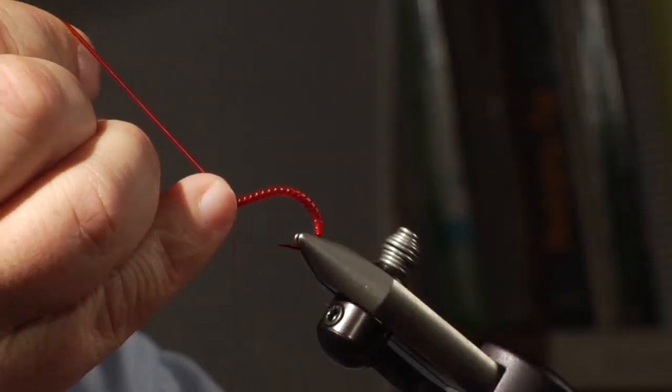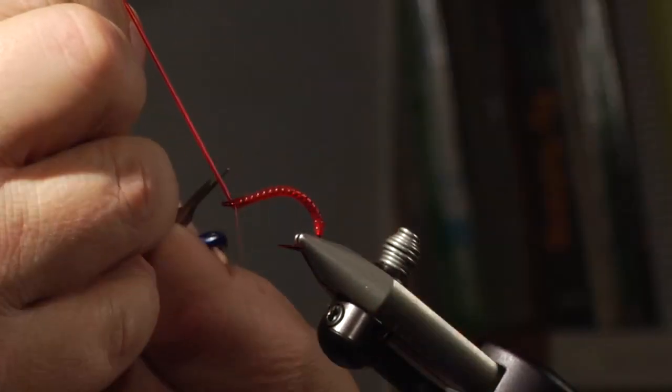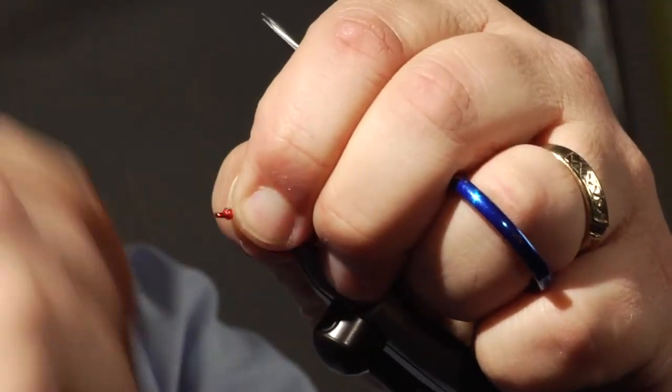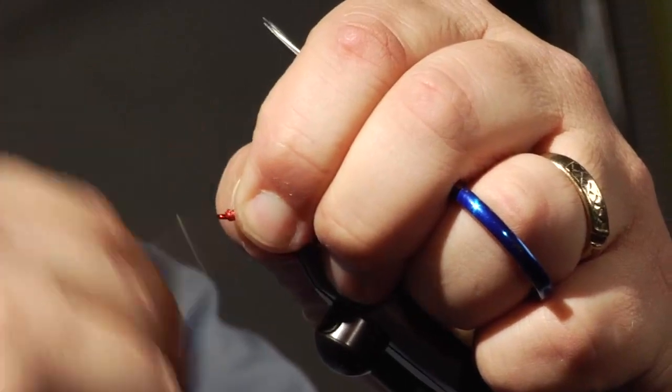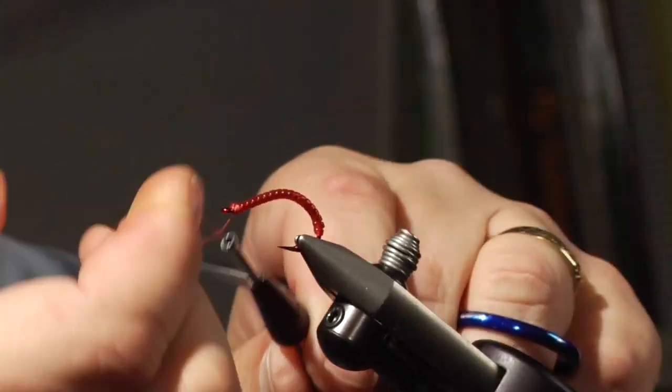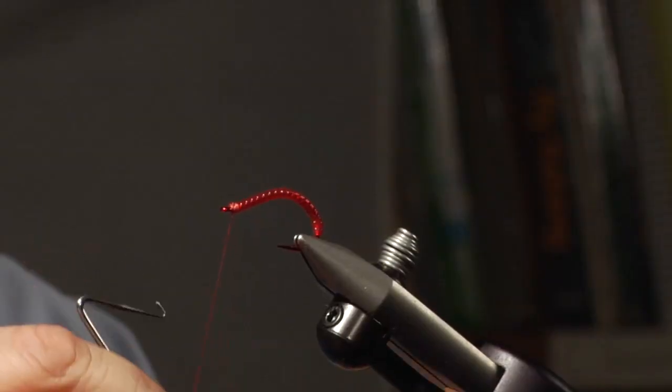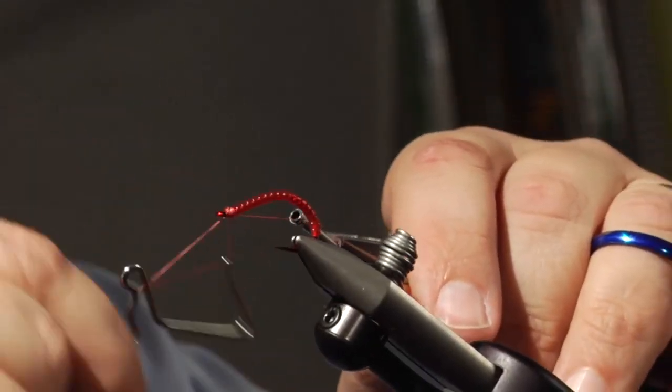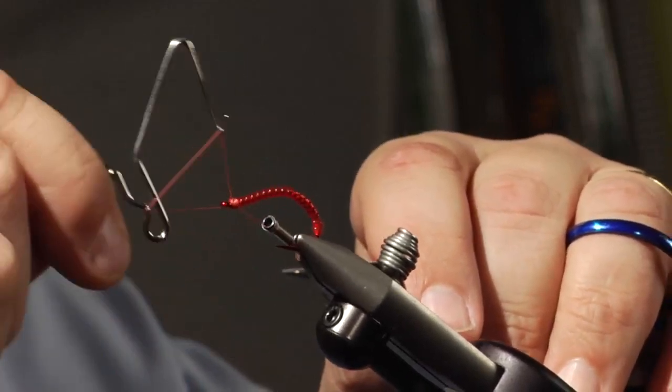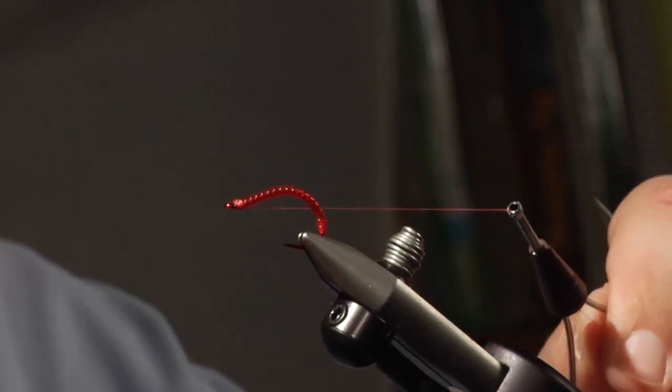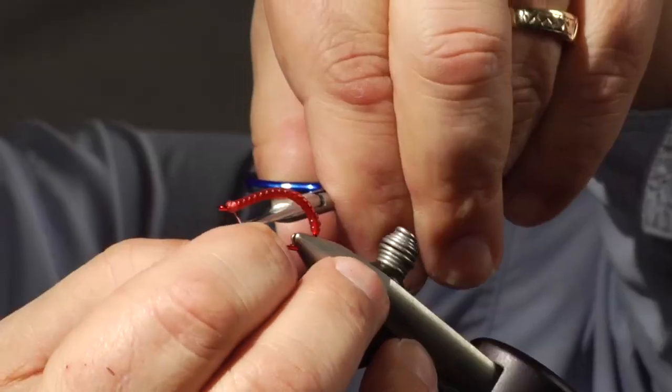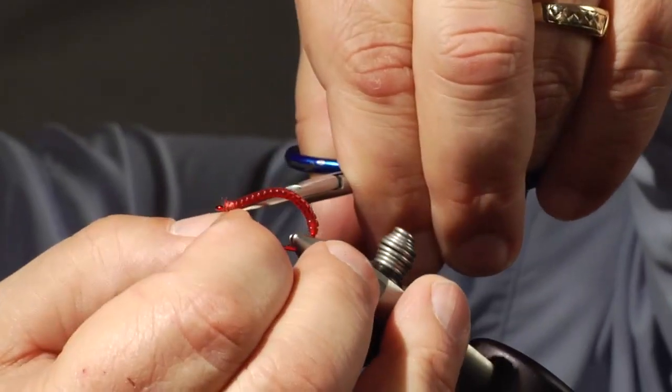You want to tie that off with three to four good wraps. Go ahead and snip your larvalace and finish the head. Tie your whip finish. Go ahead and trim that thread off.